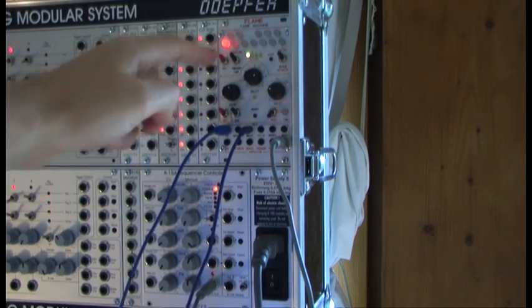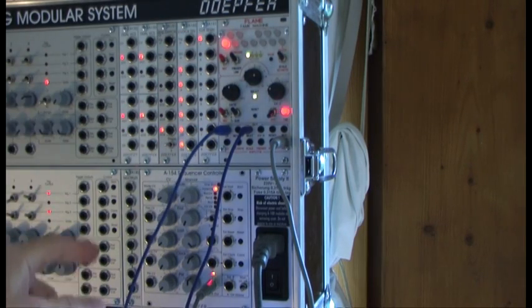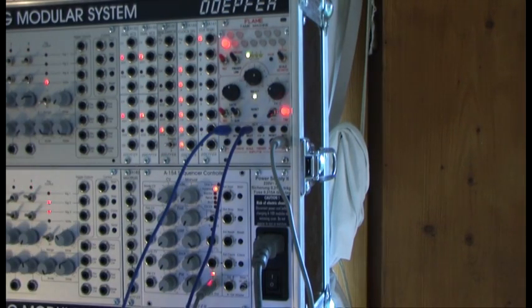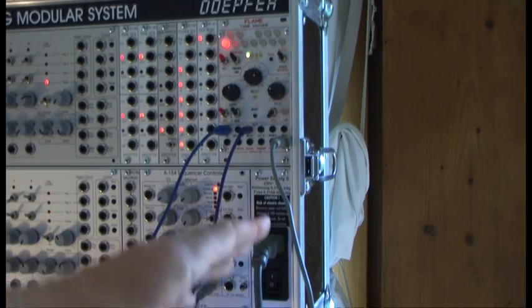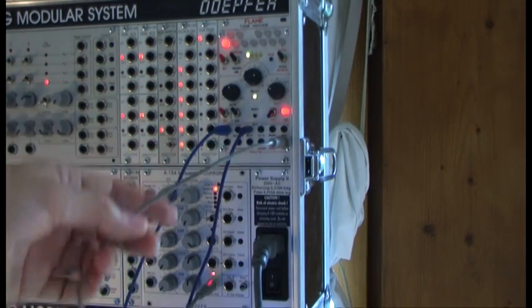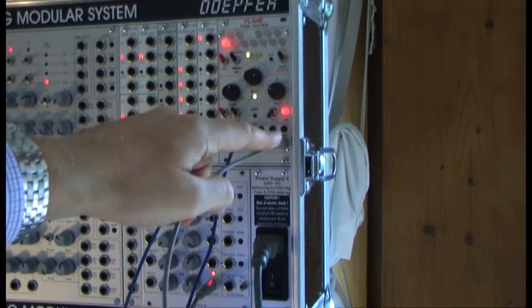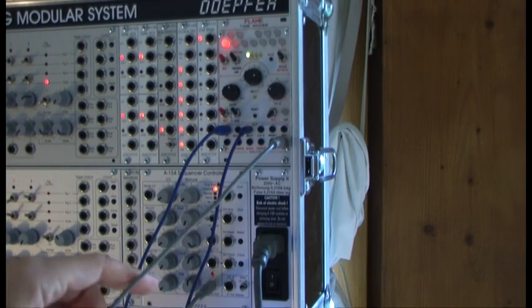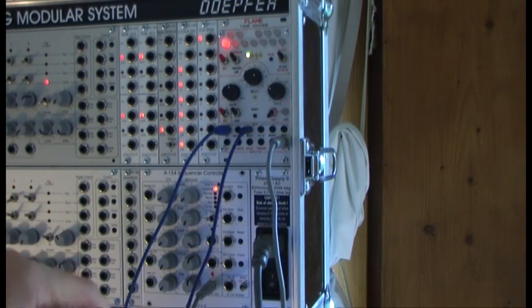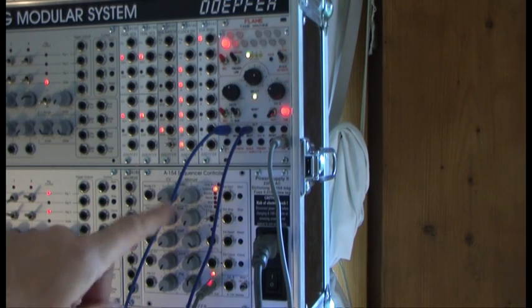And now what we really want to do is play a sequence on the analog sequencer and have the notes quantized. So our first step here is to establish a link of the clock of the sequencer to the Tame. And here you see my sequencer controller. This is a 154 Doepfer sequencer controller.